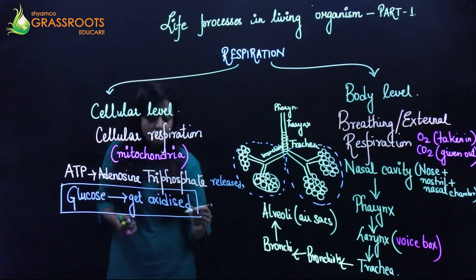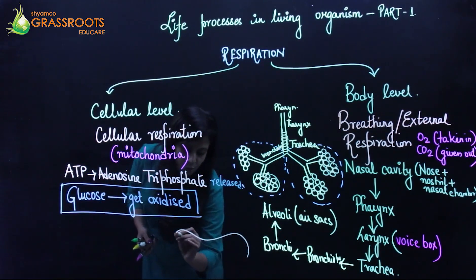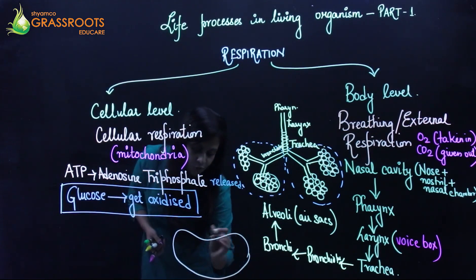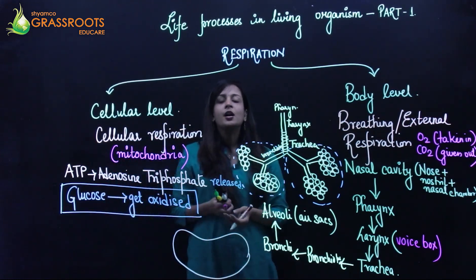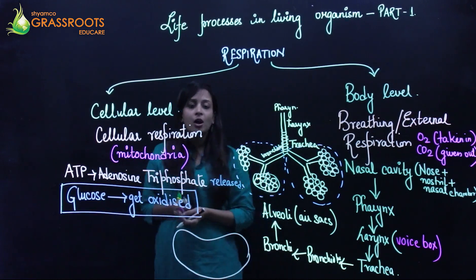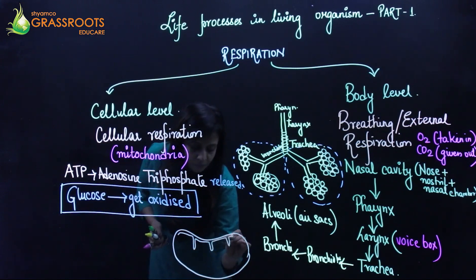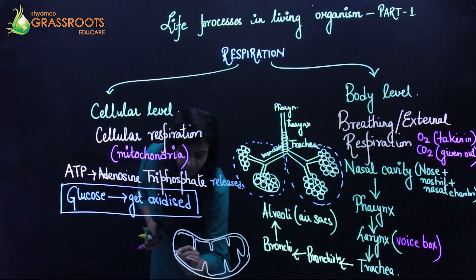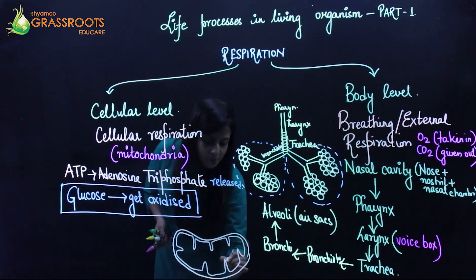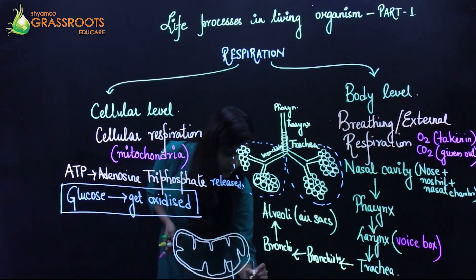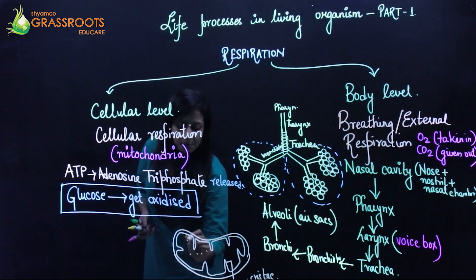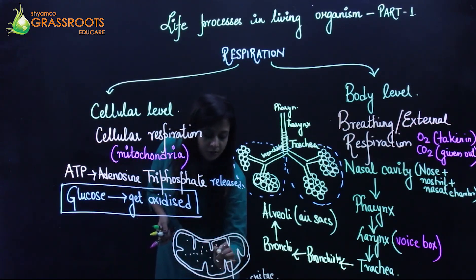Looking at the structure of the mitochondria, it more or less looks like a bean-shaped structure. Just like many other cell organelles, the mitochondria is a double-walled structure. The inner folded part is known as the cristae, and the fluid-filled content inside is known as the matrix.